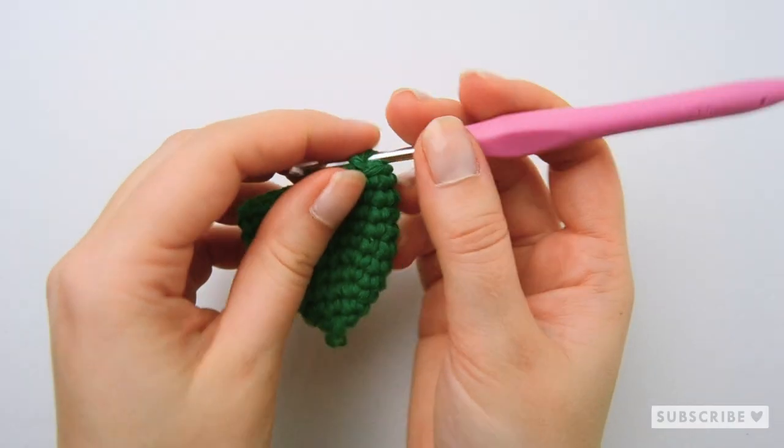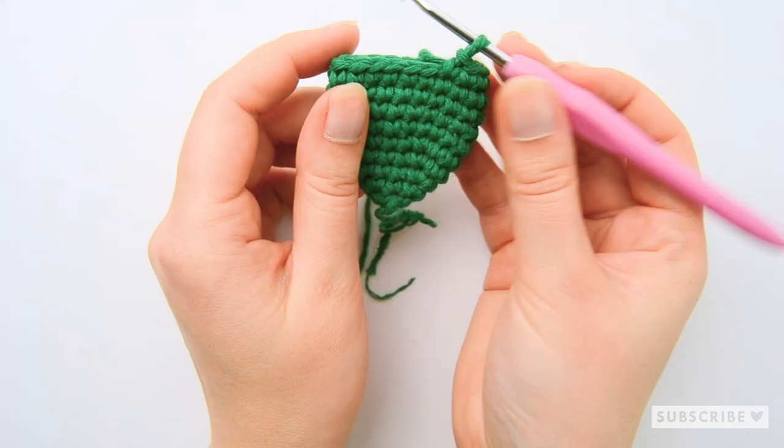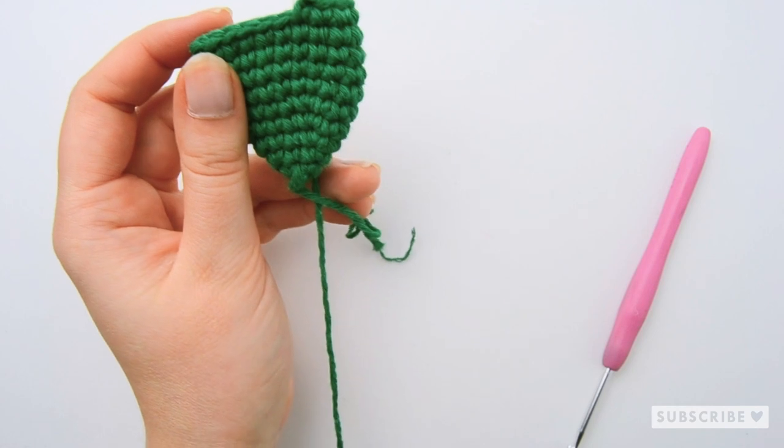Okay so this is how your ear should look like after five rows with one single crochet in each stitch.